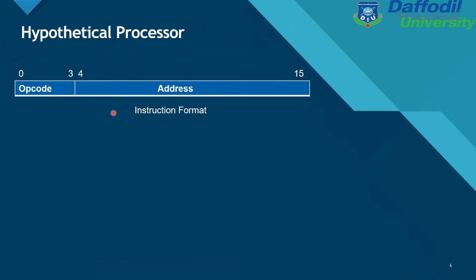This is the instruction format of the hypothetical processor. Bits 0 to 3 represent the opcode and bits 4 to 15 represent the address. When data is received, bits 0 to 3 are the opcode and bits 4 to 15 are the address. This describes a 16-bit data format.